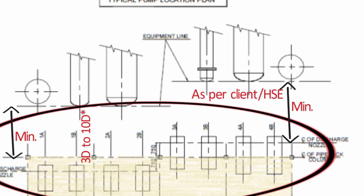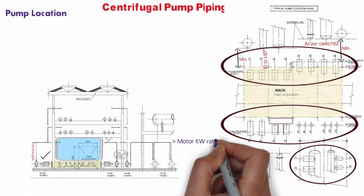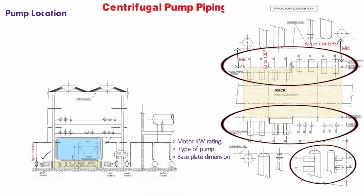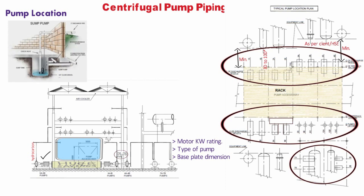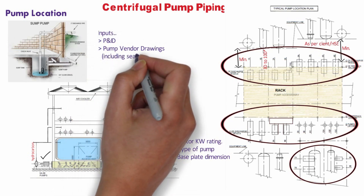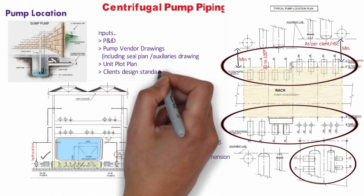The clearance between any structure or steelwork and the pump discharge line shall be 70 mm minimum. Adequate clear space for lifting — either temporary or permanent — should be considered when locating the pump for lifting of motor or pump during maintenance. Minimum spacing between pump and adjacent equipment should be maintained as per client requirements or HSE standards. For deciding pump location, we need to ask the mechanical department for motor kW rating, type of pump, and base plate dimensions. Locating pumps in a pit should be avoided if possible; if not, approval from HSE shall be obtained. Inputs required for piping layout include P&ID, pump vendor drawings including seal plan and auxiliary piping drawings, unit plot plan, and client design standards or guidelines.